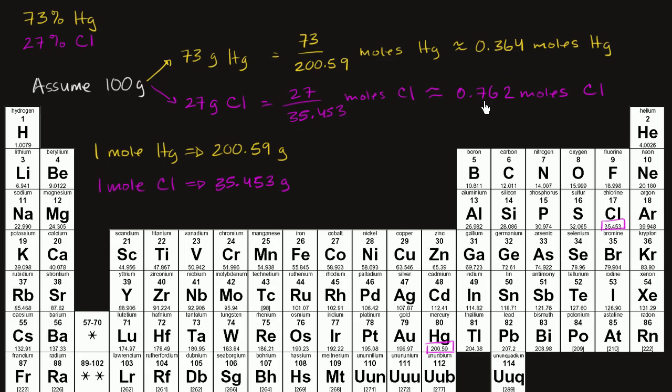Remember, this is just a number. When I say 0.762 moles, this is just 0.762 times Avogadro's number of chlorine atoms. This is 0.364 times Avogadro's number of mercury atoms. And so we can literally think of this as the ratio.